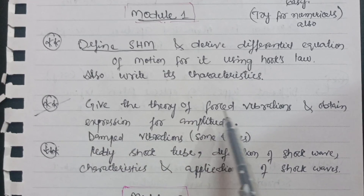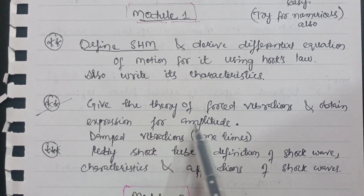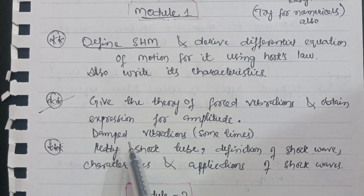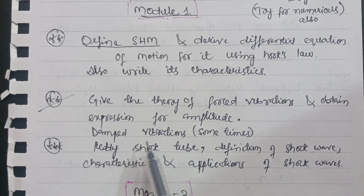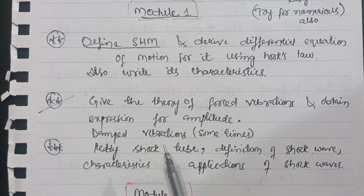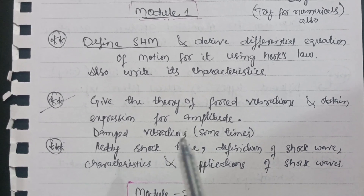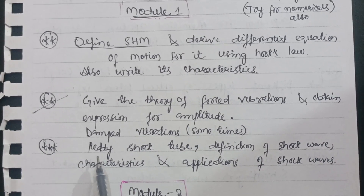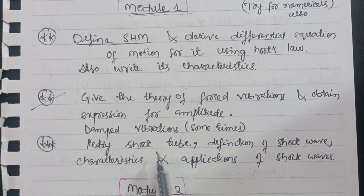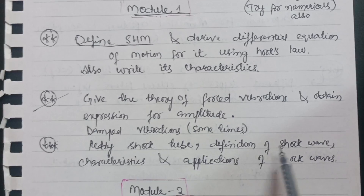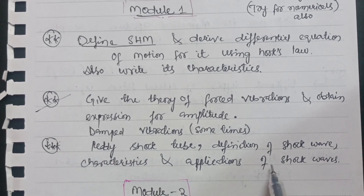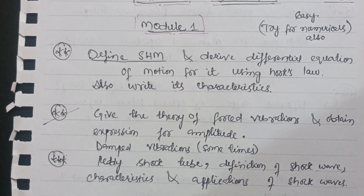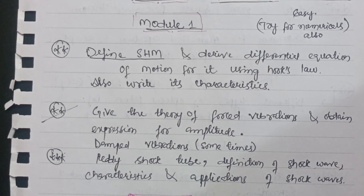Also cover the theory of forced vibrations with the expression for amplitude, and damped vibrations — sometimes they will ask what damped vibrations or damped oscillations are and require the corresponding equation. Another important question in Module 1 is the shock tube: write its construction, working, definition of shock wave, characteristics, and applications of shock waves. This much content is enough for Module 1, but also attempt the numericals.